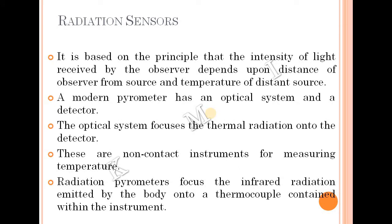It is based on the principle of intensity of light. The modern pyrometer has an optical system and a detector — it focuses thermal radiation onto the detector. These are non-contact instruments for measuring temperature. A radiation sensor is a pyrometer.